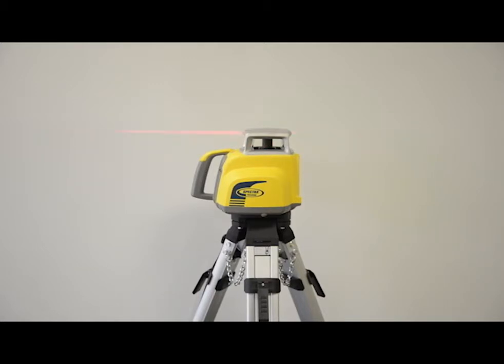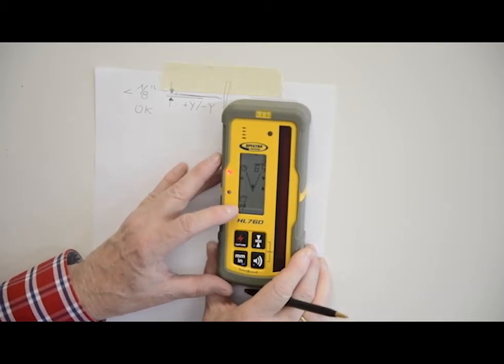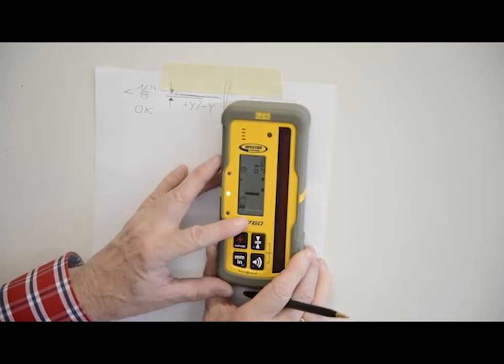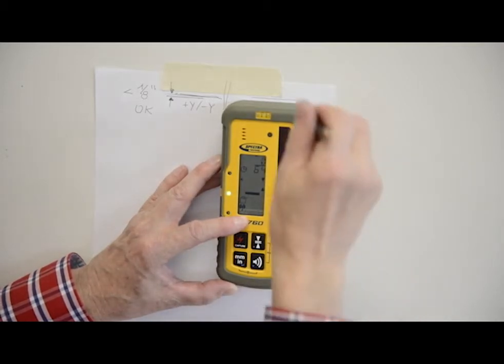Once you've made the mark for the plus X axis, rotate the laser again 180 degrees minus X axis toward the wall. Allow the laser to re-level and make the next mark at the wall.